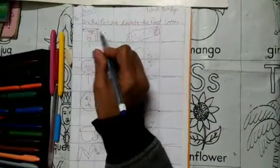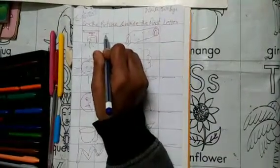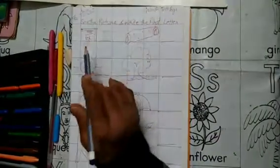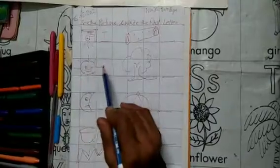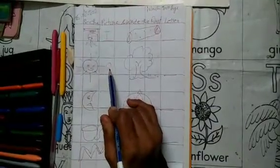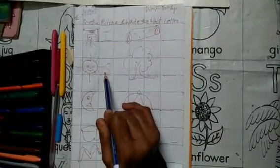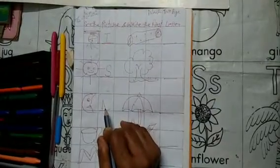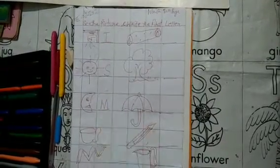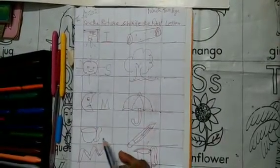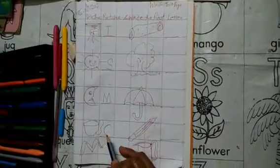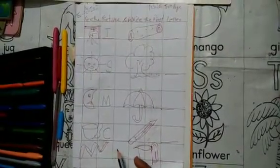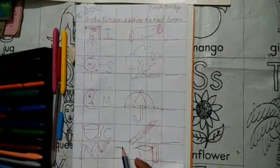T for tap. S for sun. M for moon, M for mummy, M for moon. C for cup, C for cat. Z for zigzag, Z for zigzag, zipper, Z for zoo.